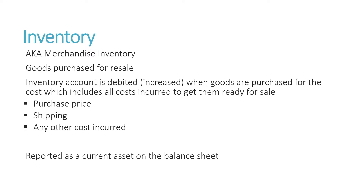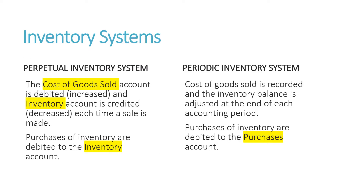Inventory is going to be classified as a current asset on the balance sheet. Companies are going to either use a perpetual inventory system or a periodic inventory system. At this point, because of barcoding and other advances in technology that make perpetual inventory systems more practical, most companies use perpetual inventory systems. We're going to spend a little bit of time talking about periodic inventory systems in this video, and then focus on perpetual inventory systems going forward.